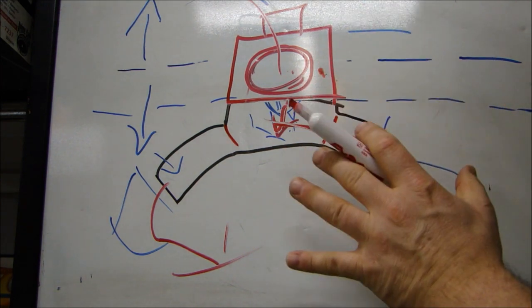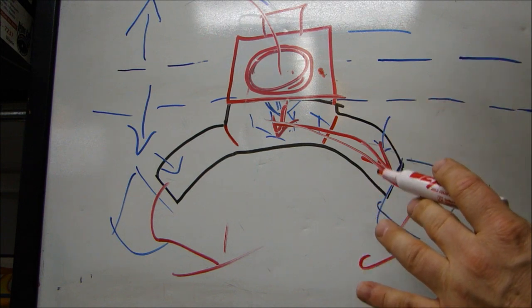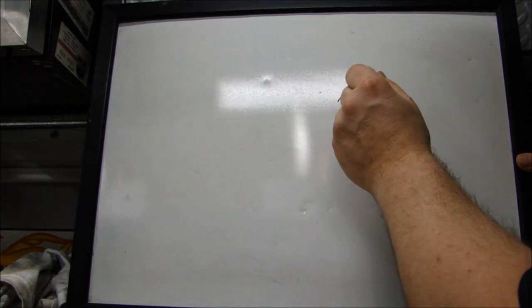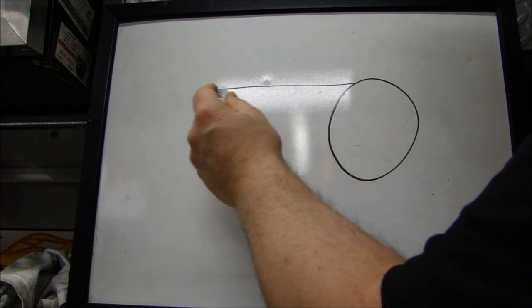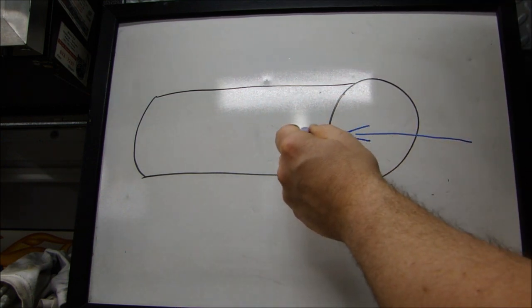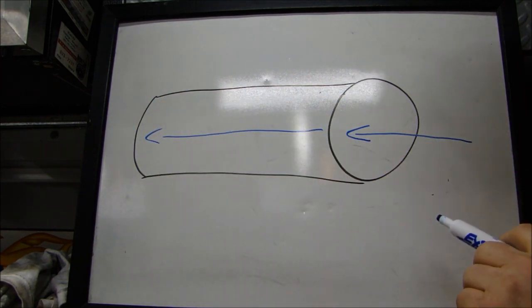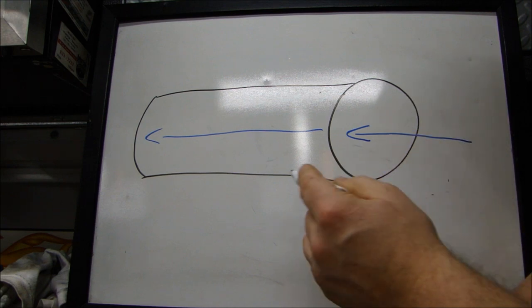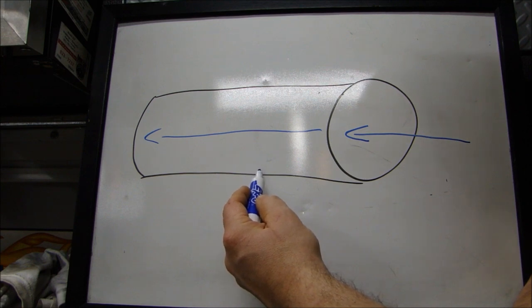Before I go into showing you the specific types of manifolds, I want to talk about the boundary layer and what happens when air flows through a pipe or through a runner. A little bit of physics here about the design of intake manifolds and the boundary layer. You have a pipe, and when air flows through a pipe, it all doesn't flow at the same speed. There's something called a velocity profile of airflow. The velocity profile has a lot to do with friction. Right near the edge of the pipe, there's friction from the wall of the pipe, so the air over there is going to move a lot slower than air in the middle. The air in the middle is just rubbing against other molecules, so it moves a lot more freely.